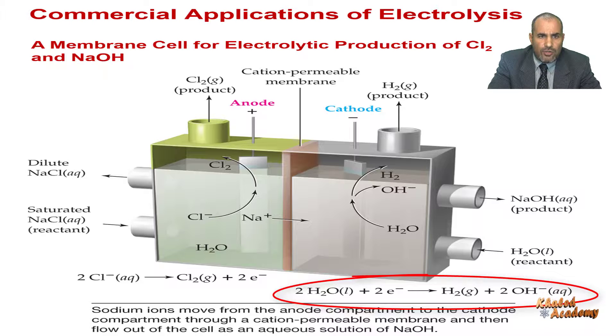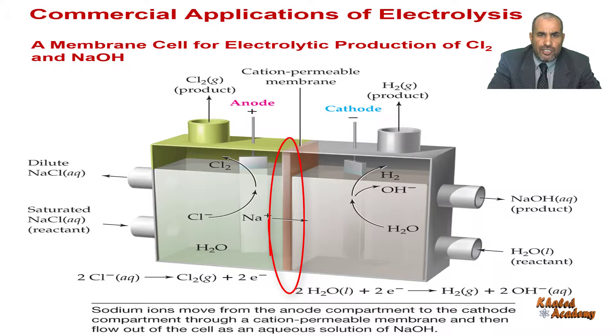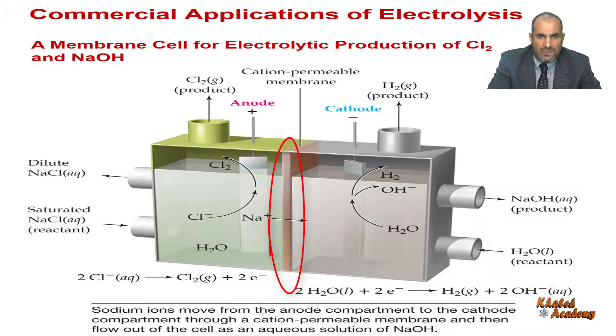Between the anode and cathode compartments is a special polymer membrane that is permeable to cations but not to anions or water.